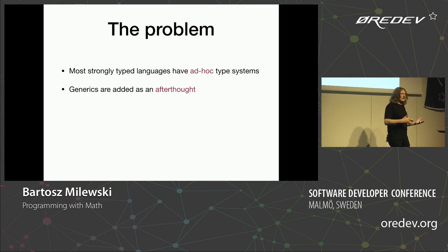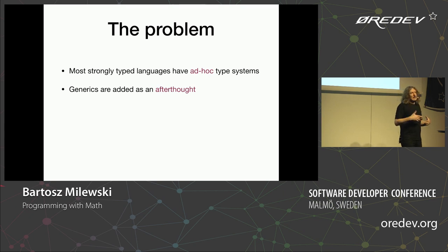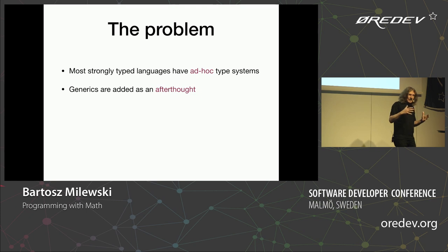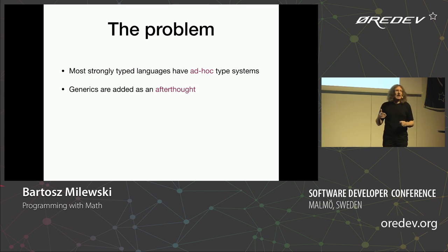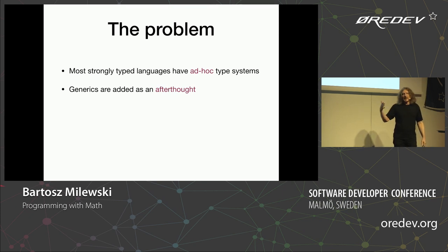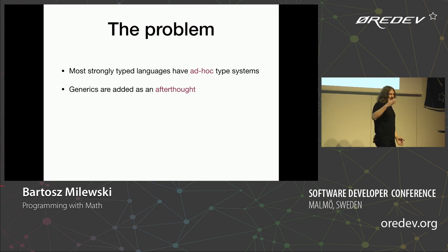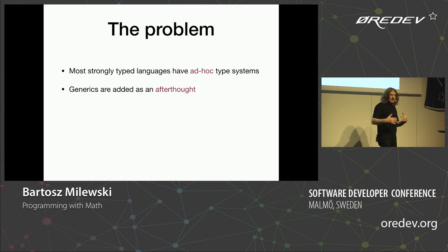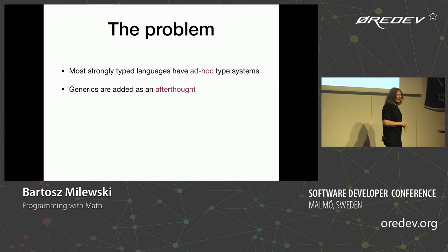Then you try to add generic types as an afterthought in order to build libraries. C started without any generic types — you had to use macros. Then C++ came and they came up with templates because they wanted to write the standard template library (STL). Then Java came and did everything with casting and void pointers. Eventually they decide to add generics on top of an existing language without really thinking about it from the beginning. And now we have some new languages that say no generic programming, but in a few years they will have it.